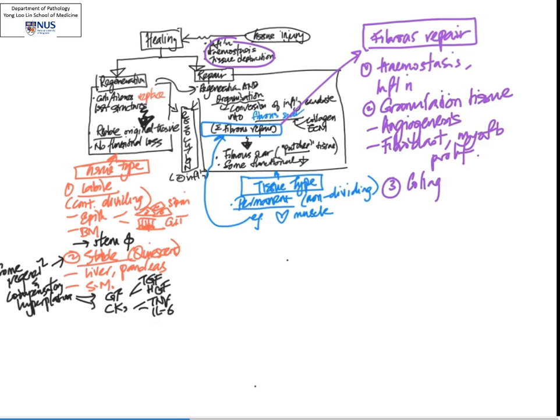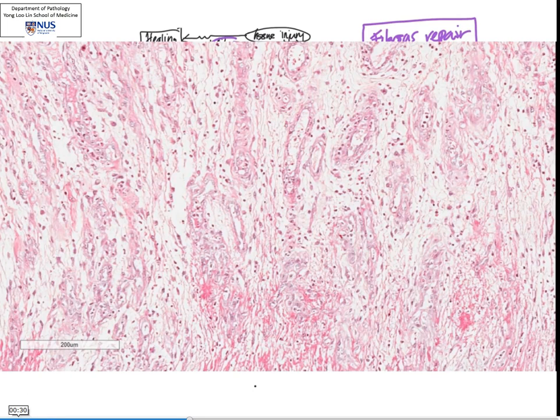The next step will be collagen synthesis. If you remember, a very important part of fibrous repair will be laying down of collagen, and also wound contraction. Wound contraction is brought about by the myofibroblasts, which have contractile features. They are able to pull the wound edges together and make the wound smaller. Finally, there is a process of remodeling to increase the strength of the wound.